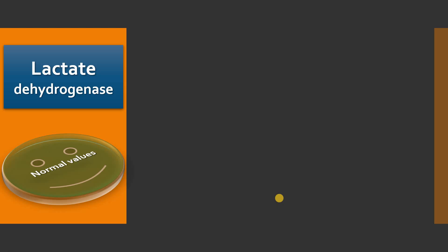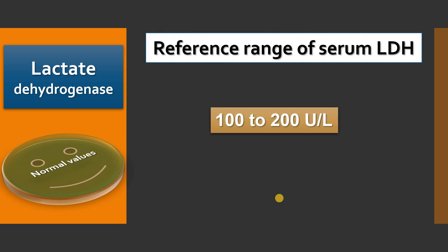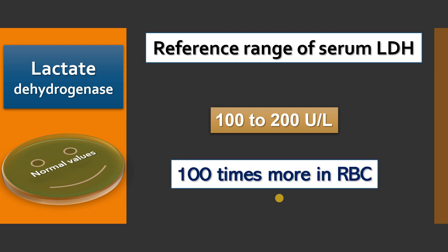What is the reference range for lactate dehydrogenase in serum? The total LDH level in serum is about 100 to 200 international units per liter. Since it is present inside the RBC, any hemolysis affects its estimation — its concentration is about 100 times more inside the RBC than in plasma or serum.